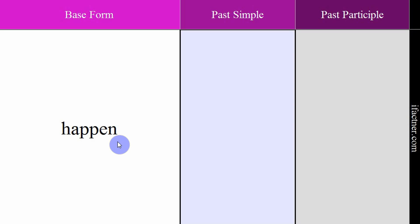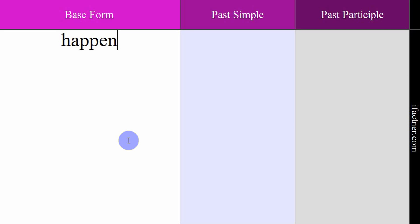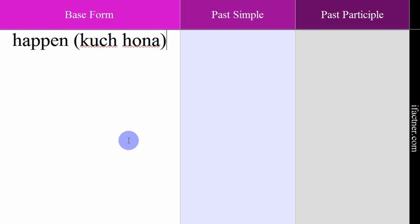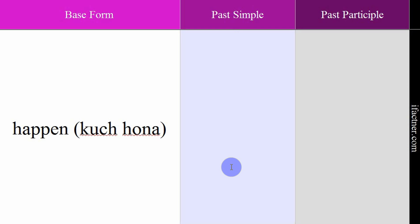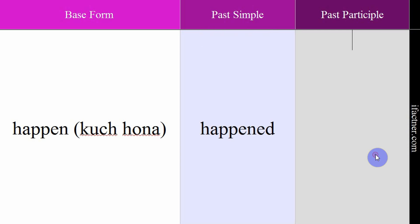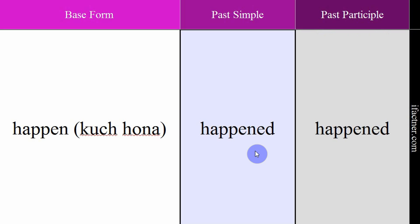The next word is 'happen', meaning kuch hoona — for something to occur. Example: 'It happens to everyone.' — Yeh sab ke saath hota hai. Past simple and past participle form is 'happened'. Past simple: 'It happened to me.' — Yeh mere saath hua. Past participle: 'It has also happened to me.' — Yeh mere saath bhi ho chuka hai. Verb: happen. Meaning: kuch hoona. Past simple and past participle: happened.